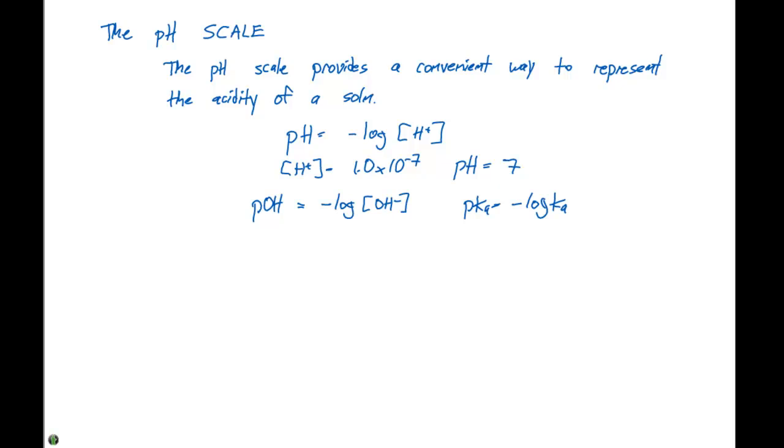So anytime you see a lowercase p in front of something, it means we're taking the negative log of that. So if we look at some various H plus concentrations and we looked at the pH, for example, we have 1 times 10 to the minus 1, 1 times 10 to the minus 2, 1 times 10 to the minus 3, and 1 times 10 to the minus 7. The pH's of each of these are going to be 1, 2, 3, and 7 respectively, because we would take the negative log of that.